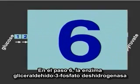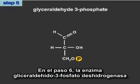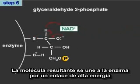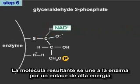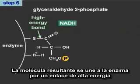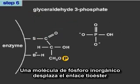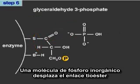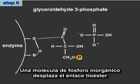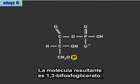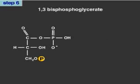In step 6, the enzyme glyceraldehyde 3-phosphate dehydrogenase uses NAD to oxidize glyceraldehyde 3-phosphate. The resulting molecule is connected to the enzyme by a high-energy thioester bond. A molecule of inorganic phosphate displaces the high-energy thioester bond, forming a high-energy acyl-anhydride bond. The resulting molecule is 1,3-bisphosphoglycerate.